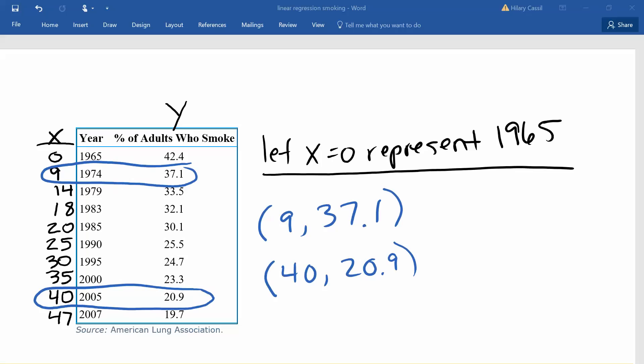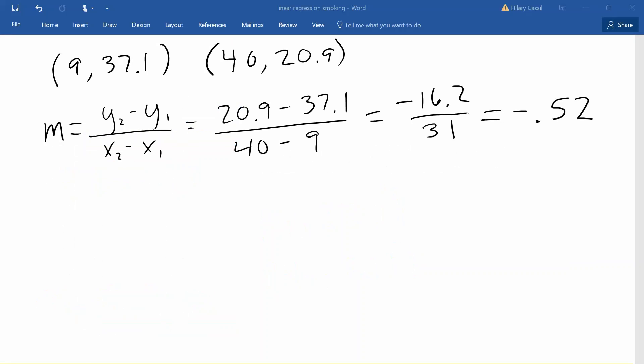To find the equation of the line by hand, let's choose these two points representing the values for 1974 and 2005. We know our first step is to find the slope of the line, so we take the difference in our y values divided by the difference in our x values. In this case, we get a negative 0.52. To interpret this, what this means is that the percentage of US adults that smoke is decreasing by about 0.52 percent every year.